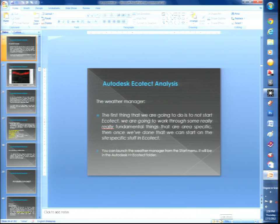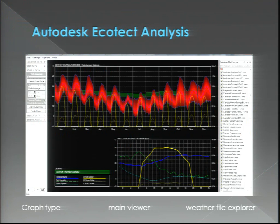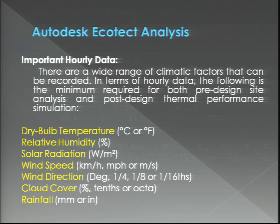The Weather Manager is called Weather Manager in the program. When you open it, it shows the location data, wind data, and hourly data. The hourly data includes temperature, humidity, wind speed, direct solar radiation, diffuse radiation, and other parameters. The key hourly data that Ecotect uses is: dry-bulb temperature, humidity, solar radiation, wind speed, wind direction, cloud cover, and rainfall — although the rainfall data is often missing from the file.